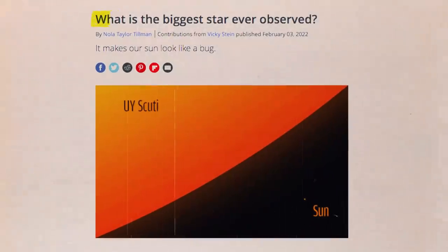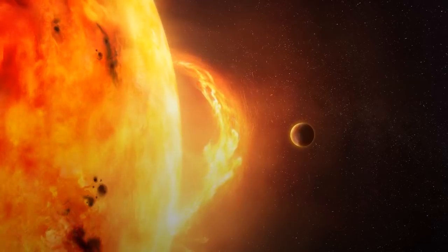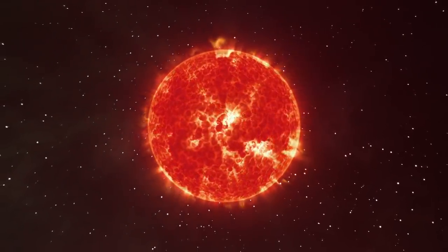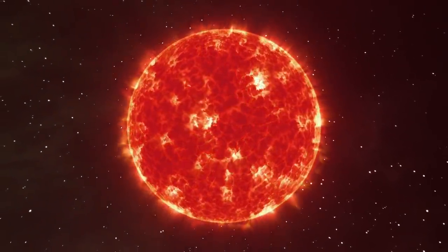This star was initially surveyed by astronomers at the Bond Observatory in Germany in 1860. The brightness of UY Scuti fluctuates over a 740-day period, which led scientists to reclassify it as an unstable variable star.